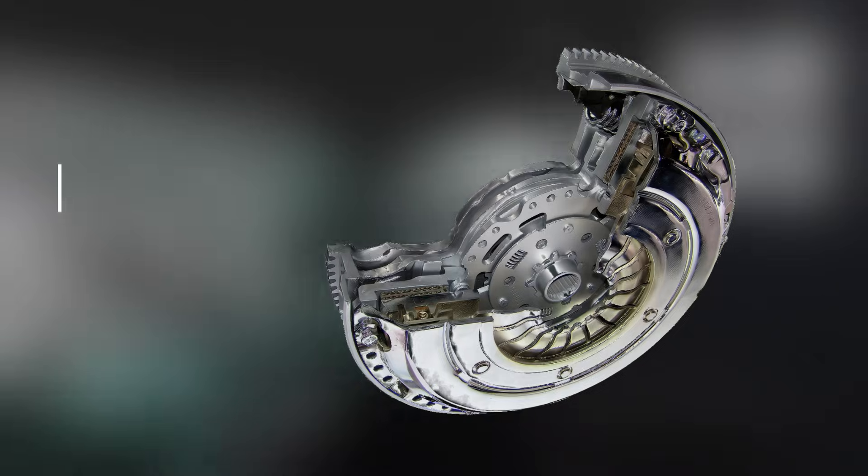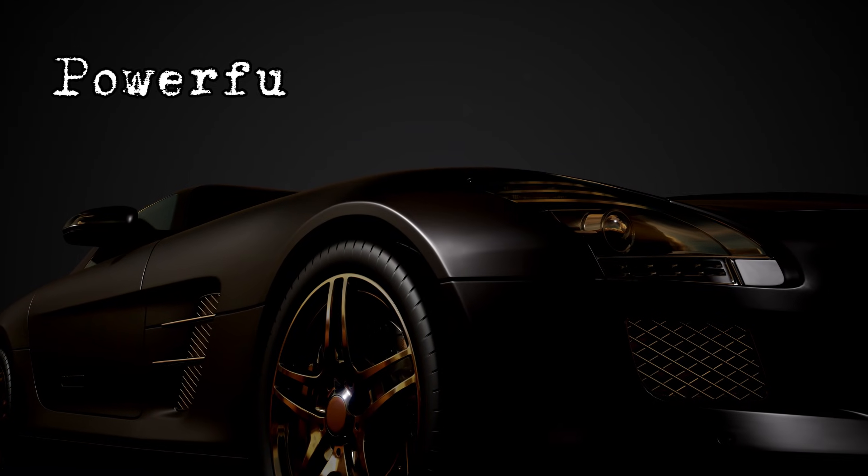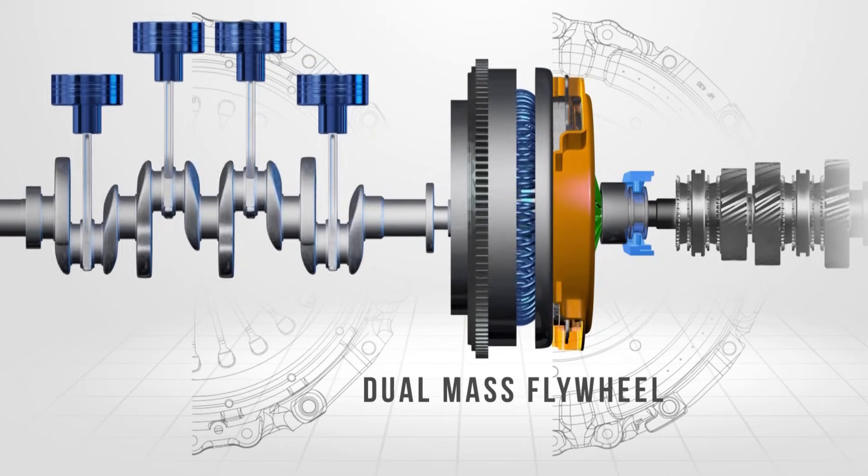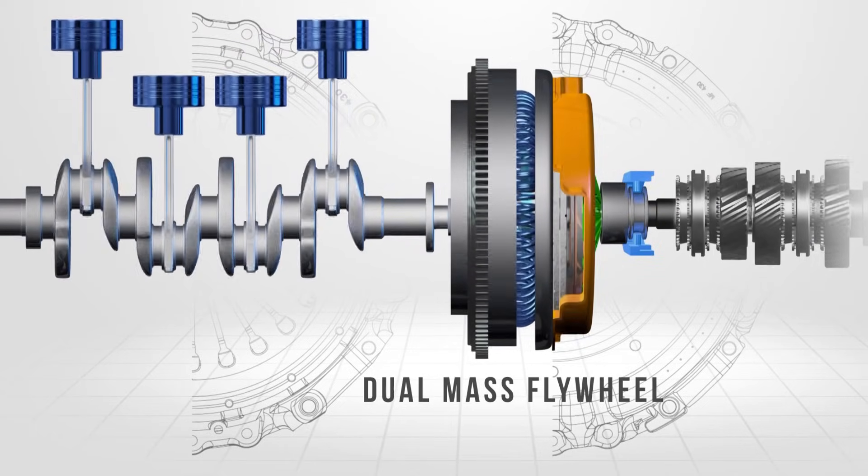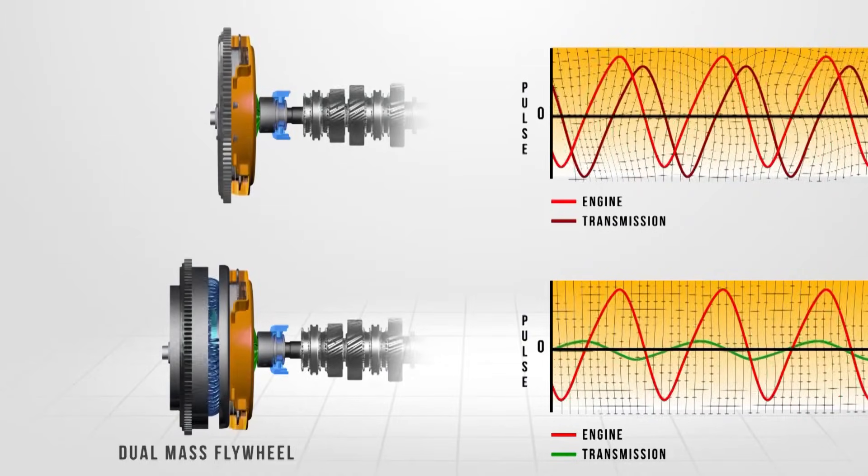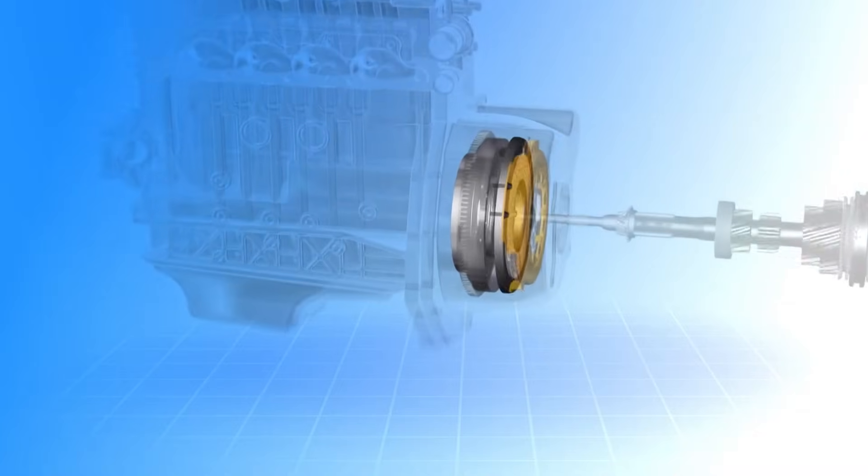Let's also talk about dual-mass flywheels. Many modern cars, especially those with powerful diesel engines, use them to reduce vibrations even further. Instead of a single solid disc, the flywheel is split into two sections, with springs and dampers in between. This design helps absorb more of the harsh vibrations from the engine before they ever reach the transmission.